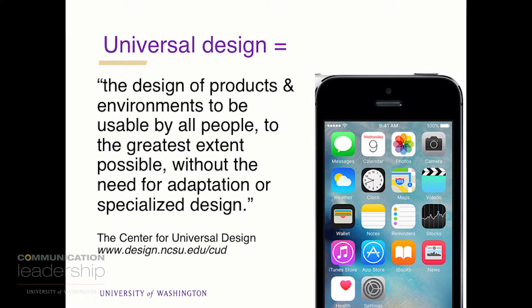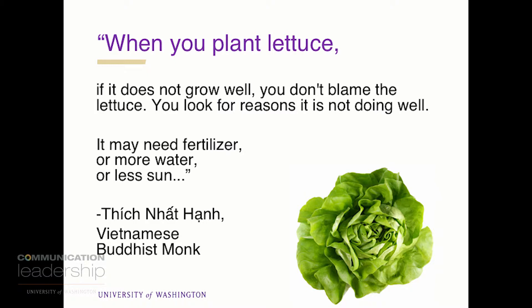Instead, we should look at the products and environments we're creating and see how we can make them more accessible from the front end. Universal design, as defined by the Center on Universal Design at North Carolina State University, is the design of products and environments to be usable by all people to the greatest extent possible without the need for adaptation or specialized design. The goal is to design things so we'll minimize the accommodations people might need. I love this quote from a Vietnamese Buddhist monk: 'When you plant lettuce, if it does not grow well, you don't blame the lettuce. You look for reasons it is not doing well — it may need fertilizer, more water, less sun.' It's like that in a class. If a student is not doing well, think about how we might redesign the class.